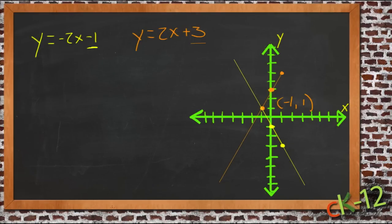We can see that if we substitute that pair in, if we put -1 in for x and 1 in for y, we get -2 times -1 minus 1 equals 1. So we have 1 in for y and -1 in for x. Well, -2 times -1 is positive 2, and 2 minus 1 is equal to 1. So that works for that equation.